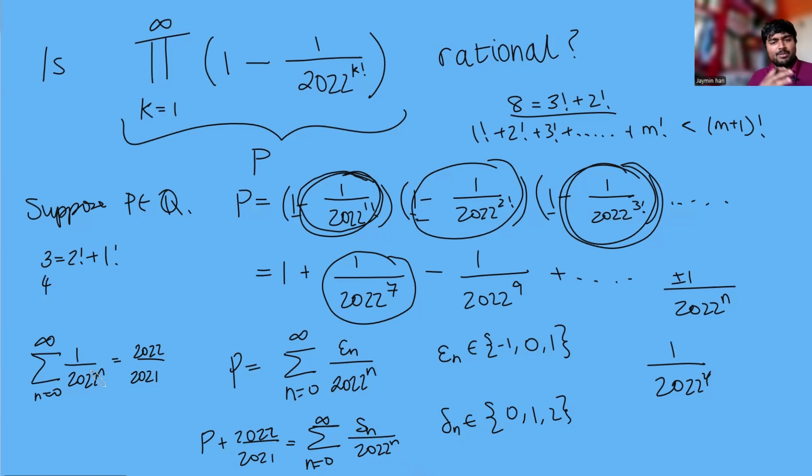So long story short we've written P plus this rational number, so remember assuming P is rational, so we've got a rational number equals the sum from n equals 0 to infinity of delta n divided by 2022 to the n. Let's see why this gives us a contradiction.